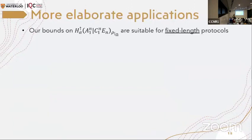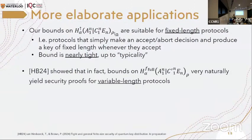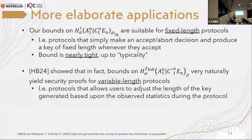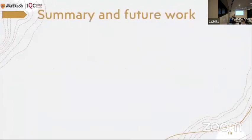Now the bound that we get on these running conditional entropies are suitable for fixed length protocols. Those that make an accept and abort decision and based on a condition on accepting, getting an accept, develop a generated fixed length key. And the bound that we get, I should also point out that are nearly tight up to typicality. And also, based on this recent result, the bound that we get on the QES entropies can also yield security proof for the variable length protocols, which are the one that you can adjust the length of the key based on the statistics that you get throughout the protocol. And then with this, with this result, our finding allows a full adaptive version of these protocols, inspired by the work of the quantum probability estimation.